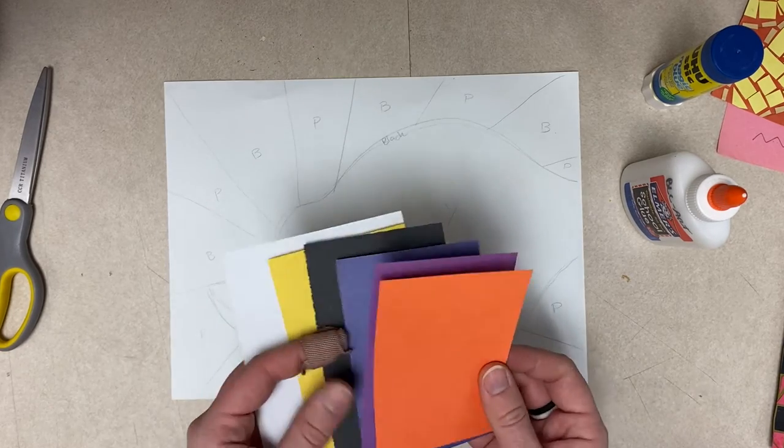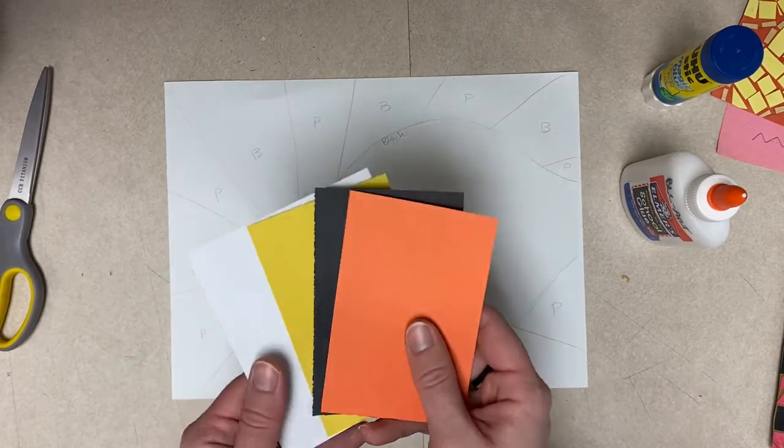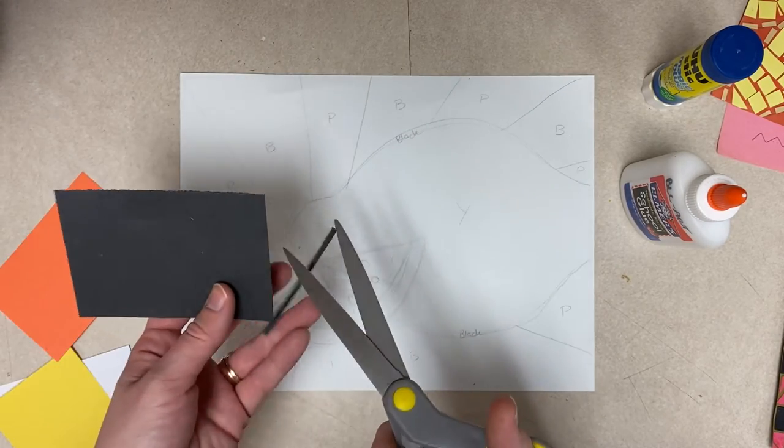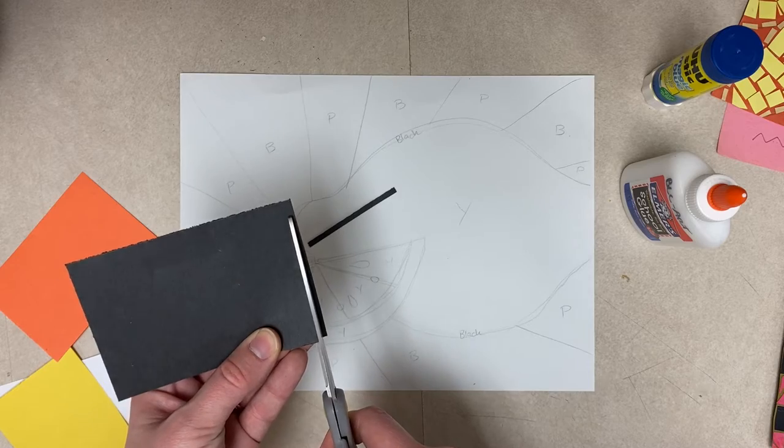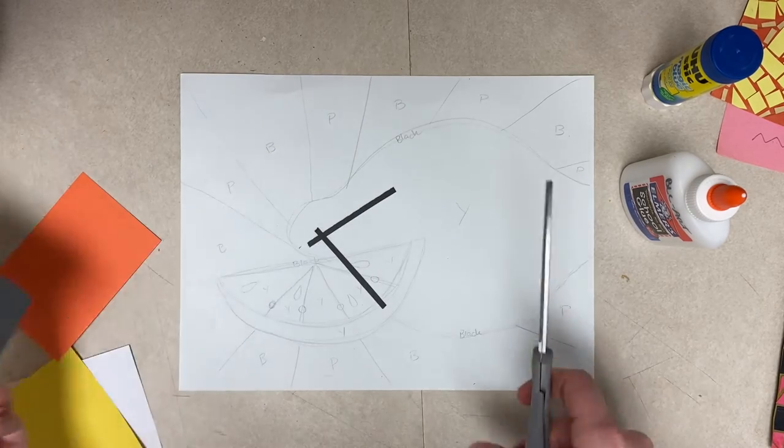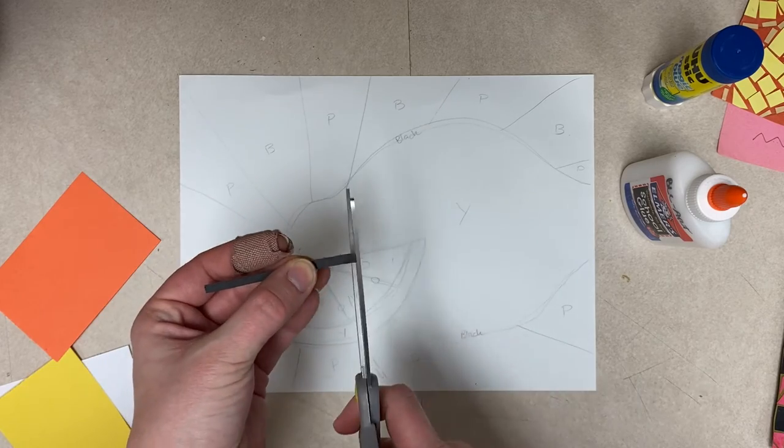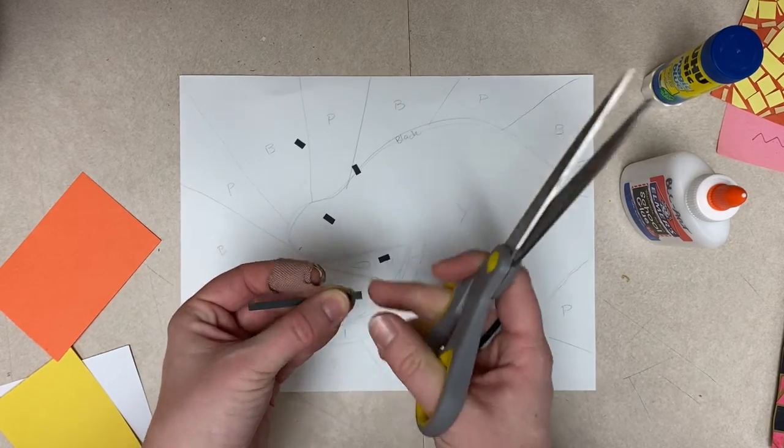So pick out the colors that you need first, depending on the section that you're focusing on. If you're doing a thin line, I like to start out by doing something like this, and then you stack them together, your pieces together, and now you're cutting double the paper.